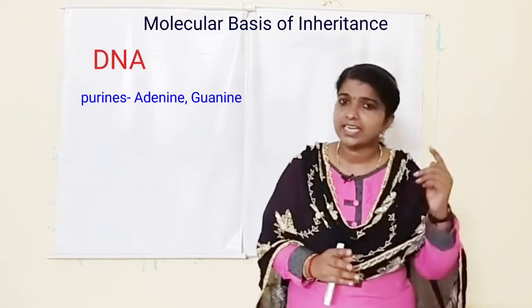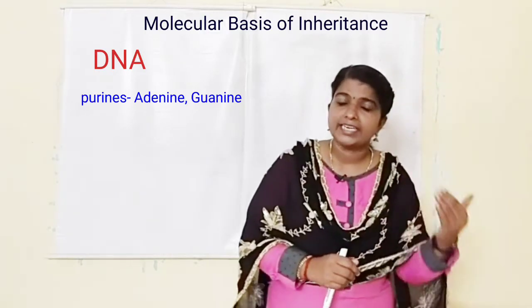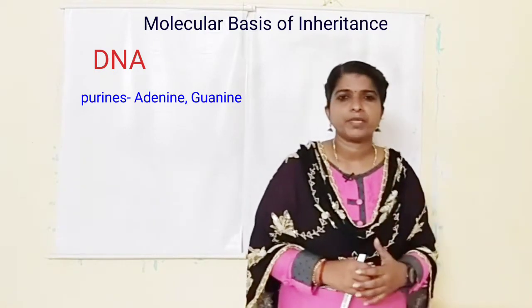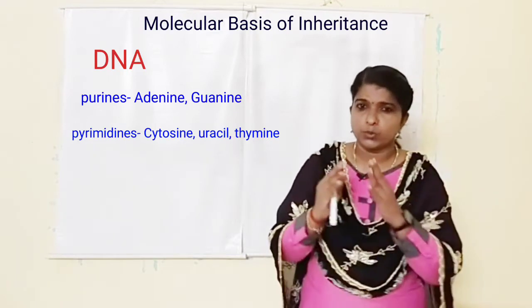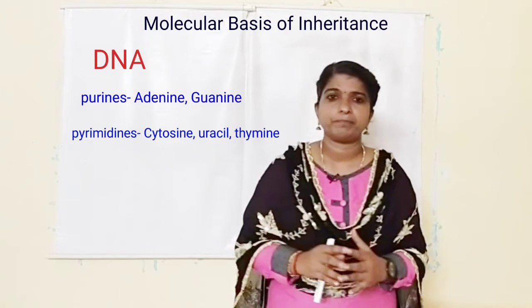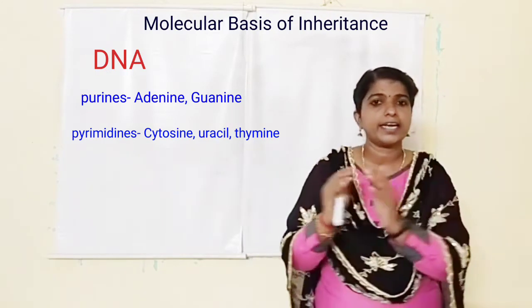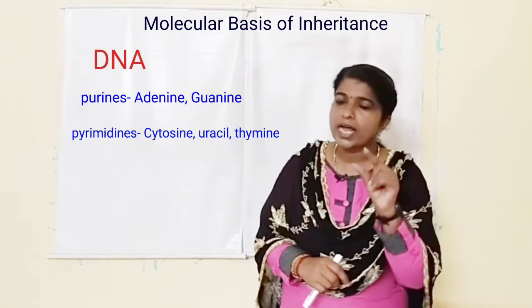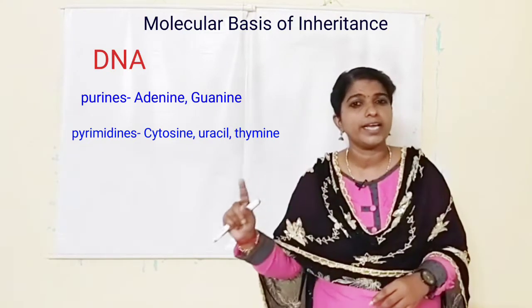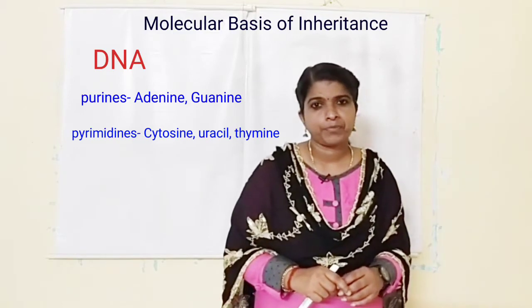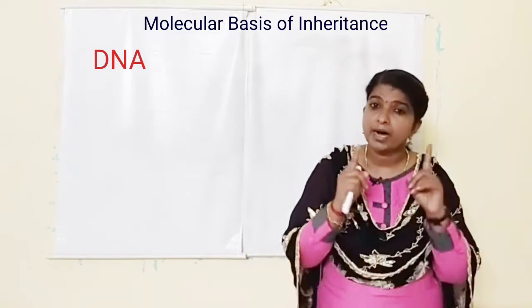You will have learned these things in Class 11 as well. Purines include adenine and guanine. Pyrimidines include cytosine, uracil, and thymine. Cytosine is common to both RNA and DNA, but uracil is present only in RNA and thymine is present only in DNA.